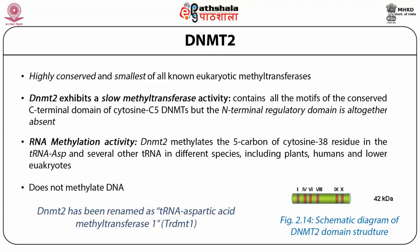DNA methyltransferase 2 is the smallest of all known DNA methyltransferases in mammals. It is highly conserved with a conserved C-terminal domain, but the N-terminal regulatory region is altogether absent. DNMT2 has been shown to be an RNA methylase rather than a DNA methylase — it selectively methylates the 5-carbon of cytosine 38 residue in tRNA aspartic acid. Thus, it has been renamed as tRNA aspartic acid methyltransferase, or TRDMT1.